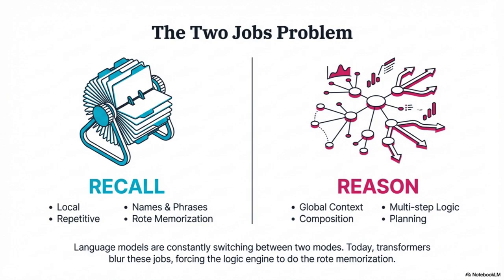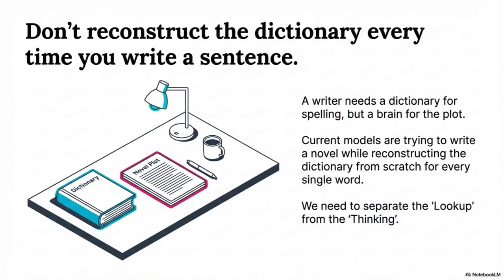Some people might be thinking, 'oh, here we go, another RAG episode.' But conditional memory is an in-model primitive — it's framed as a complementary axis of sparsity to what we already know and use: mixture of experts, MOE.